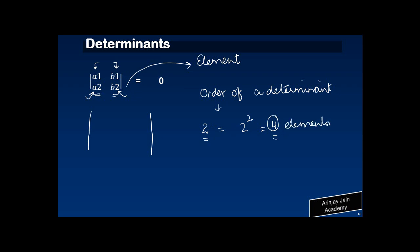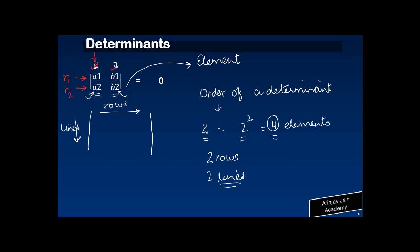When we talk about these four elements, they are organized into rows and lines. The way this works is that there are two rows and two lines. In this particular case, we have A1 and B1 — so this is row one — and A2 and B2 — this is row two. Then there is line one and line two. So effectively, there are two rows and two lines in this particular determinant.